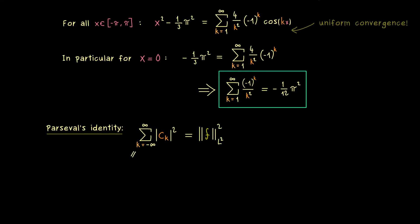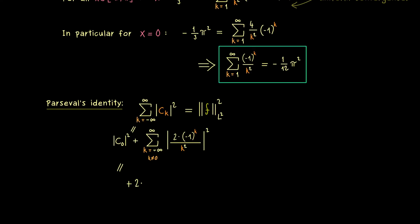On the left-hand side we pull out the constant c_0 separately, since it was an exception. For all other cases we use c_k = 2·(-1)^k/k², and the (-1)^k vanishes in the absolute value. We can split the infinite sum into two parts, writing 2 times the sum from k=1 to infinity of 4/k⁴. For c_0 we just square it, giving 4/9·π⁴.